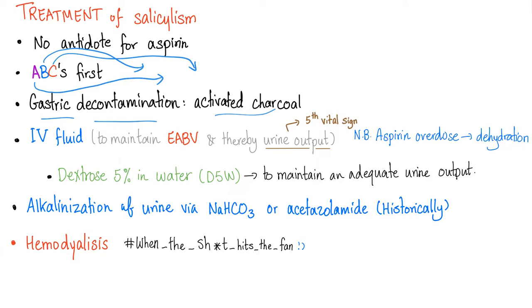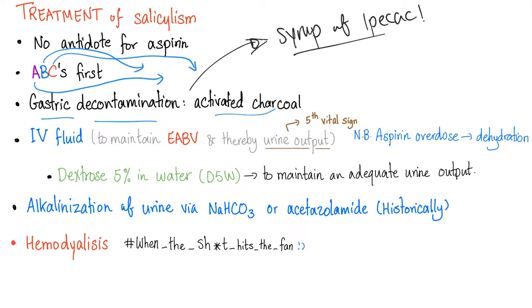Gastric decontamination with activated charcoal. Historically, syrup of ipecac was used — no one uses it today. In a desert survival scenario with no activated charcoal, having the patient swallow large amounts of salt to induce vomiting is archaic but potentially life-saving compared to cardiopulmonary arrest. The only gastric decontamination still used today is activated charcoal.